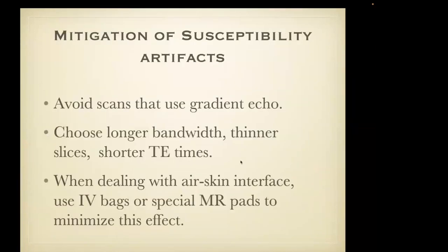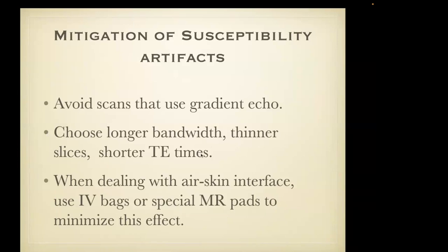There are ways of mitigating some of these artifacts. To mitigate susceptibility artifacts at 3T, avoid scans that use gradient echo imaging, choose a longer bandwidth, use thinner slices, and shorter TE times. If you're doing orthopedic imaging — for example ankle or wrist imaging — use IV bags or special MR pads to minimize the artifacts at the air-skin interface.